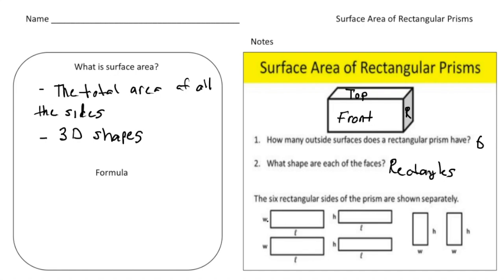Here are the dimensions of each face. To get the area of the front and back, we do width times length — and we have two of those. To get the area of the top, we do height times length, and again we have two because the top is the same as the bottom. And to find the area of the right-hand and left-hand sides, we do width times height — and again we have two of those.